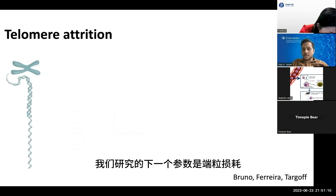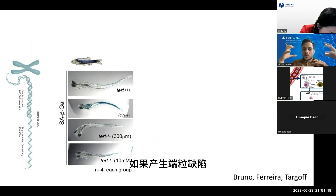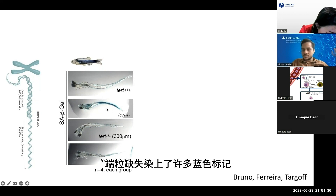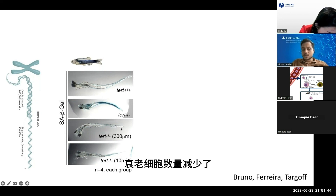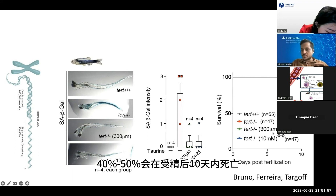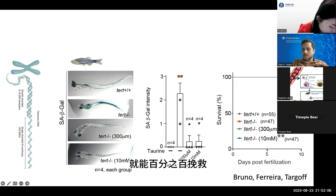The next parameter we looked at is telomere attrition. With age, telomeres get shortened, and in telomerase-deficient animals — which have no functional telomeres — there is increased senescence. In telomerase-deficient fish, blue staining shows increased accumulation of senescent cells, but when treated with taurine, the senescent cell numbers go down, with blue staining reduced at 300 micromolar and 10 millimolar of taurine, as quantified on the right-hand side. Notably, 40–50% of these telomerase-deficient fish die within 10 days after fertilization, but taurine treatment achieved 100% rescue of telomerase-deficiency-induced consequences on organismal health.